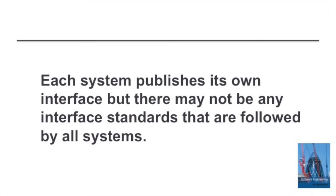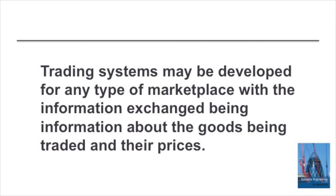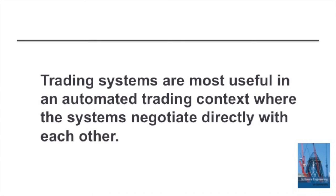As the systems trade information, there may be one-to-one or one-to-many interactions between these systems. Usually there's no general interface standard — each system implements its own interface with the other systems. It's a completely ad hoc approach to systems construction. Trading systems are essentially marketplace systems, most appropriate where we have automated trading, where automated agents interact directly with each other. The area where we have seen this type of systems of systems is algorithmic stock trading, where systems owned by trading companies interact automatically with each other to trade stocks — sometimes called high frequency or high speed trading.